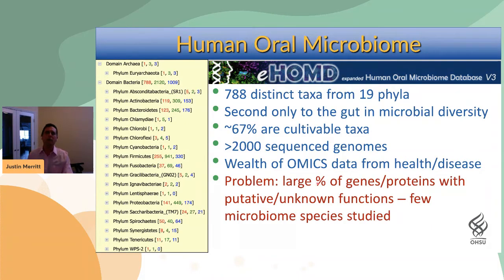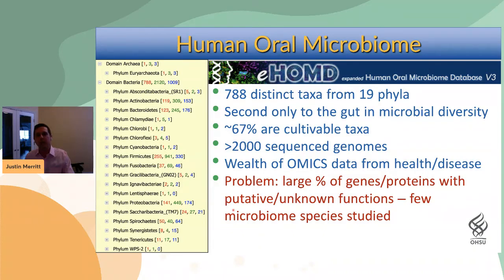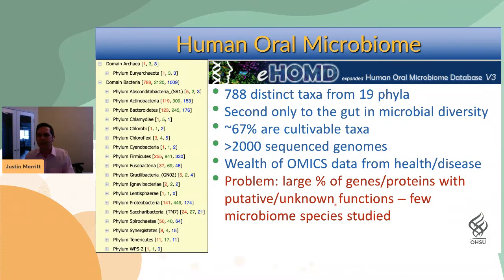The problem is a large percentage of genes and proteins in all of this data have putative or unknown functions. From my own experience, a lot of the putative genes are actually misannotated by software that annotates these genomes, and this is largely a function of the fact that very few microbiome species have really been studied at the genetic level.